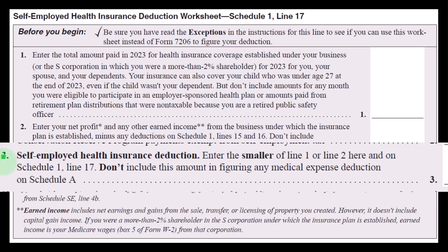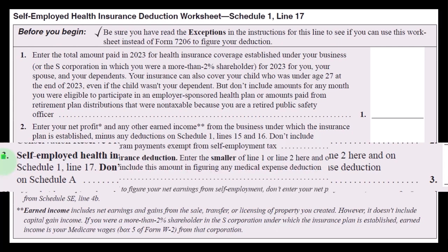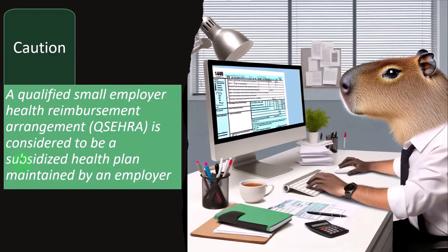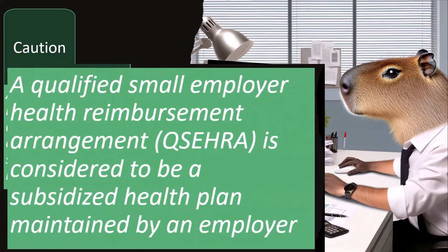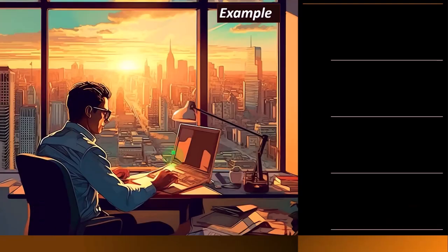Line 3, Self-Employed Health Insurance Deduction: enter the smaller of Line 1 or Line 2 here, and on Schedule 1, Line 17. Don't include this amount when figuring any medical expense deduction on Schedule A. Caution: a Qualified Small Employer Health Reimbursement Arrangement (QSEHRA) is considered to be a subsidized health plan maintained by an employer.